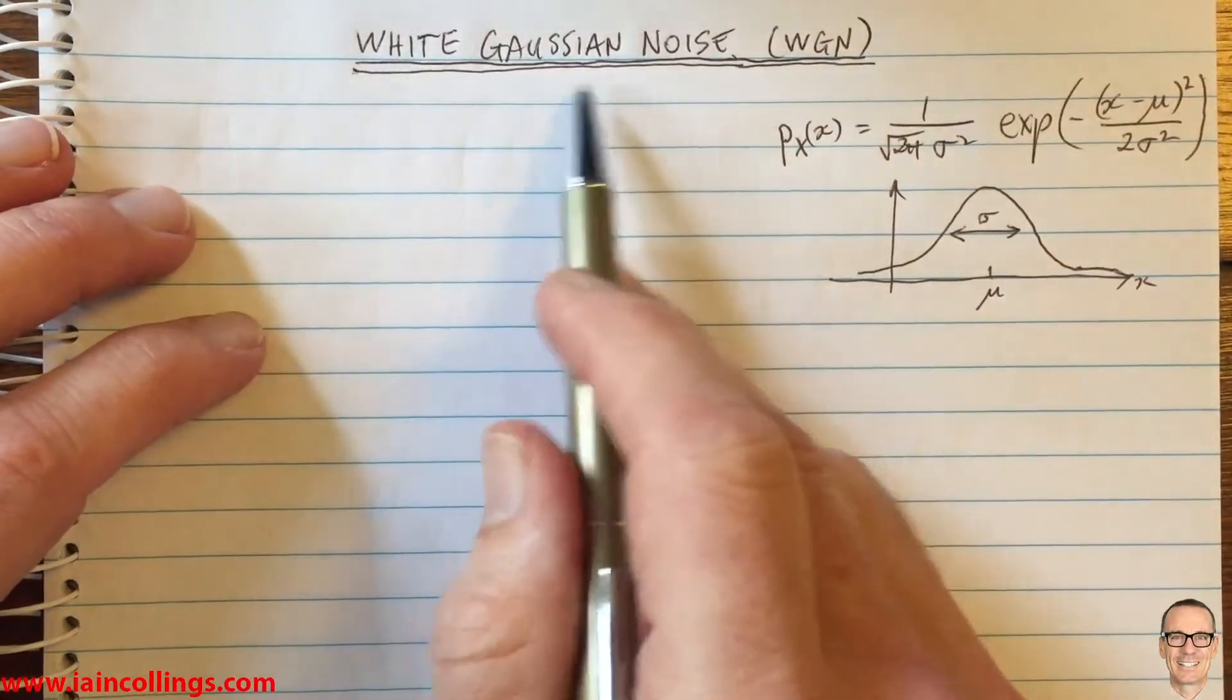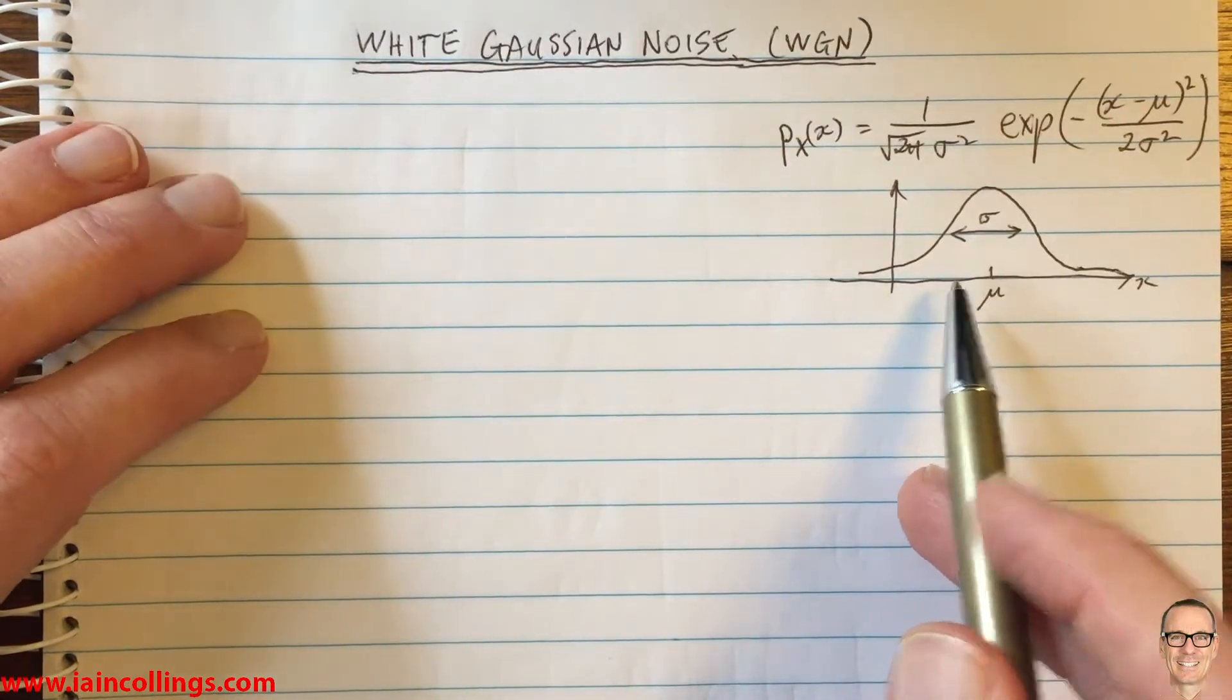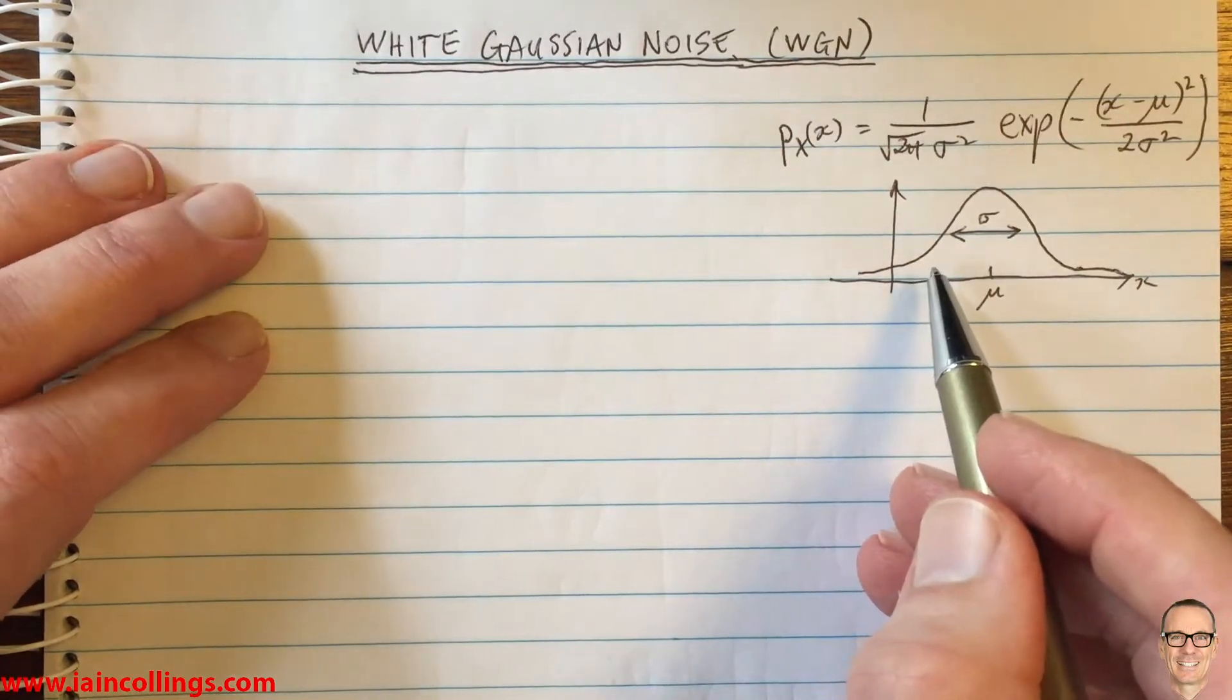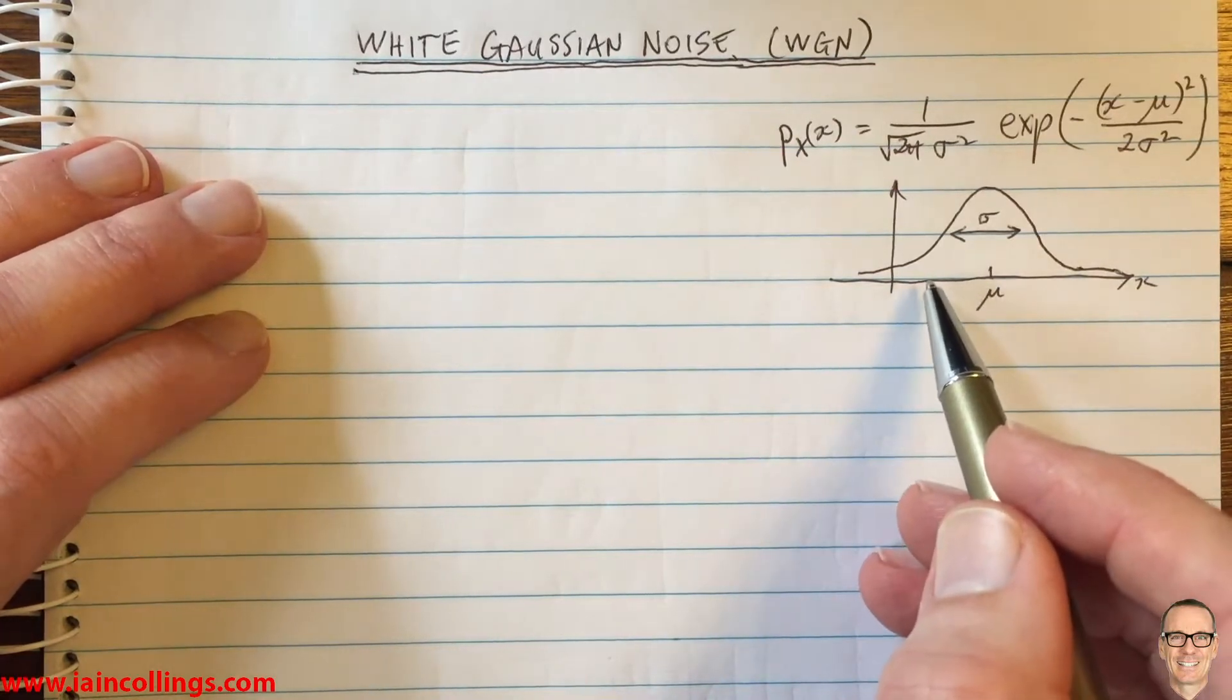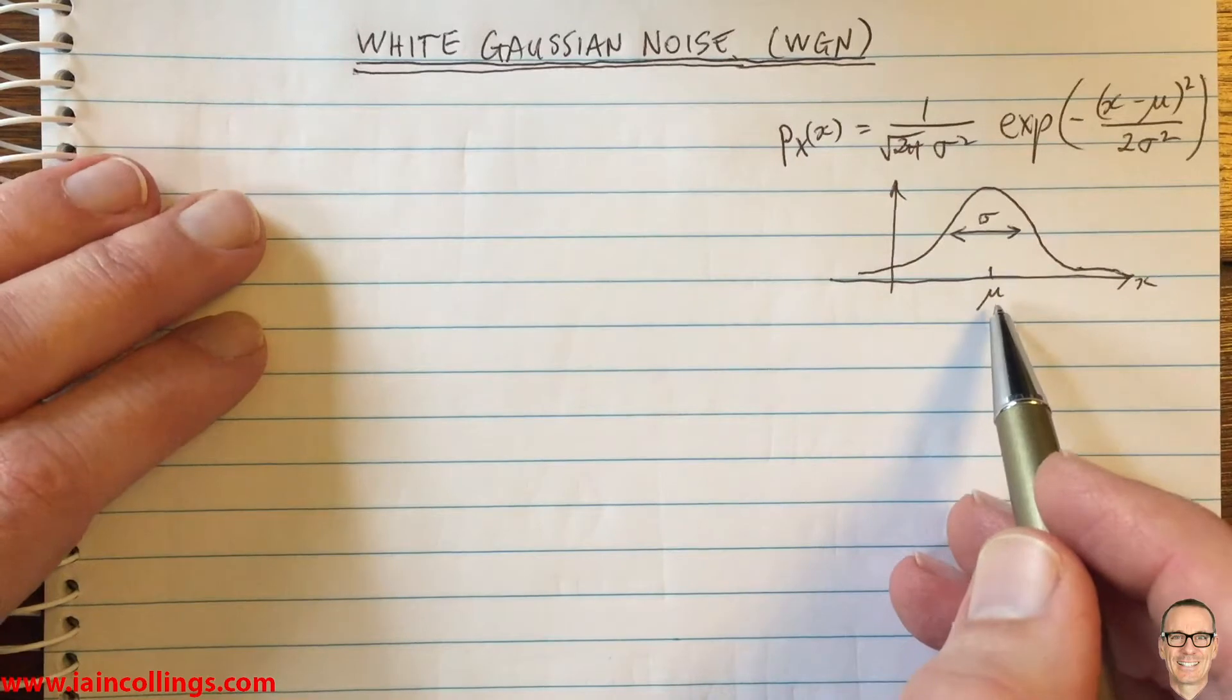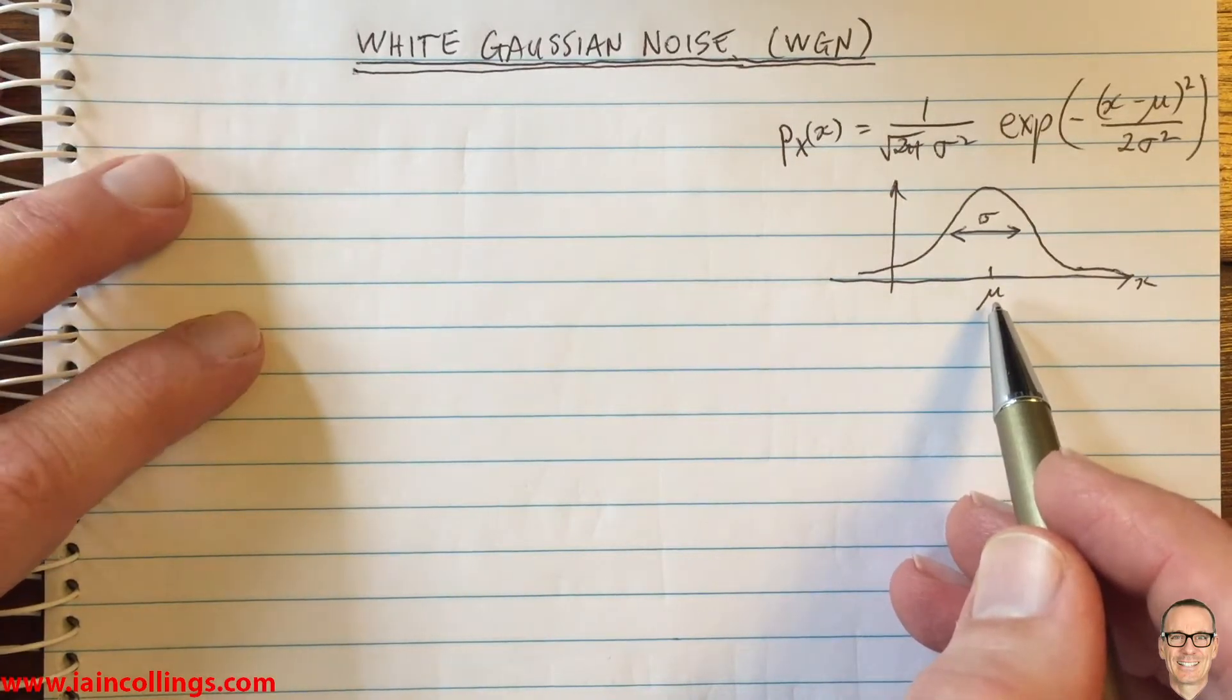So what is white Gaussian noise? Here's the Gaussian distribution, and for more information on Gaussian noise see my other video which is in the link below. This is the general Gaussian shape, and for noise the mean is zero as we discuss in that video.